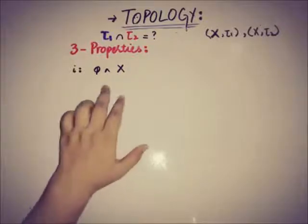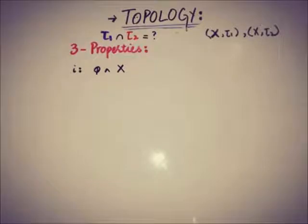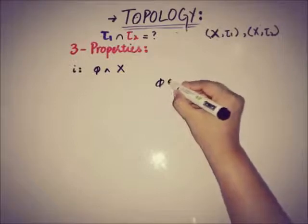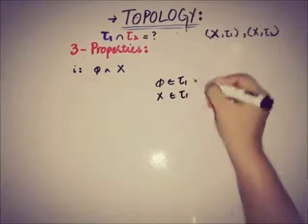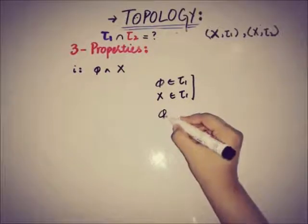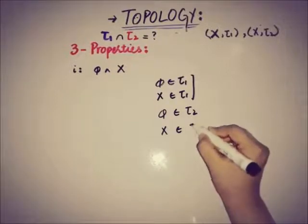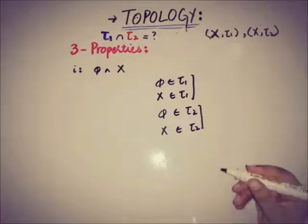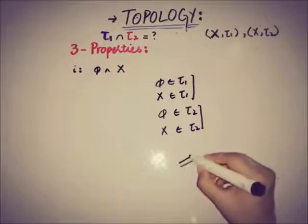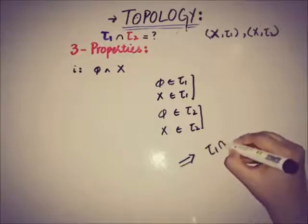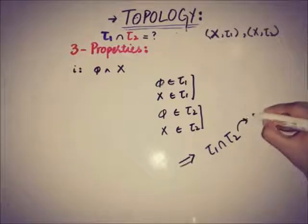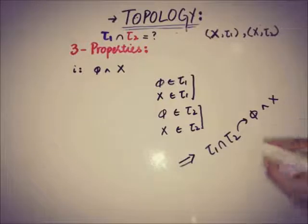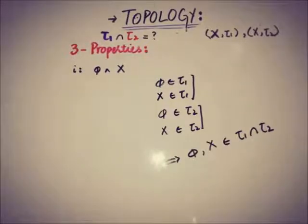The very first condition is about the empty set and the set X itself. We know that the empty set and X belong to τ1 by definition, and they also belong to τ2 by definition. Therefore, taking the intersection, φ and X also belong to τ1 ∩ τ2. So the first condition is satisfied.